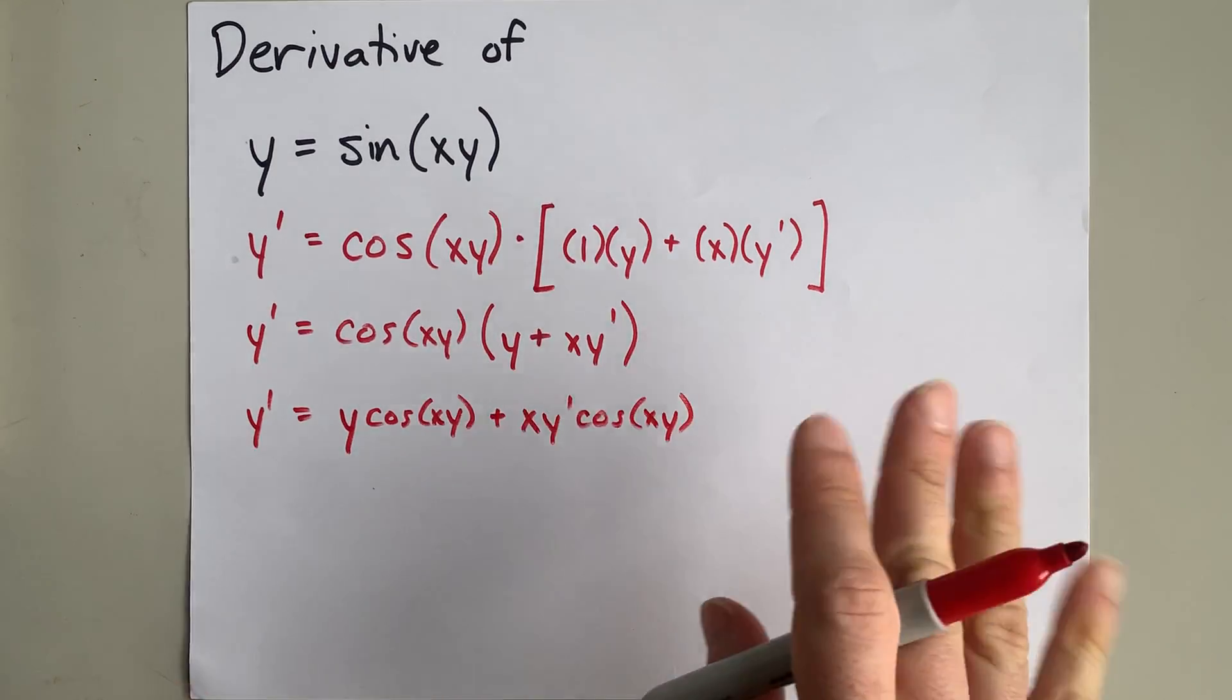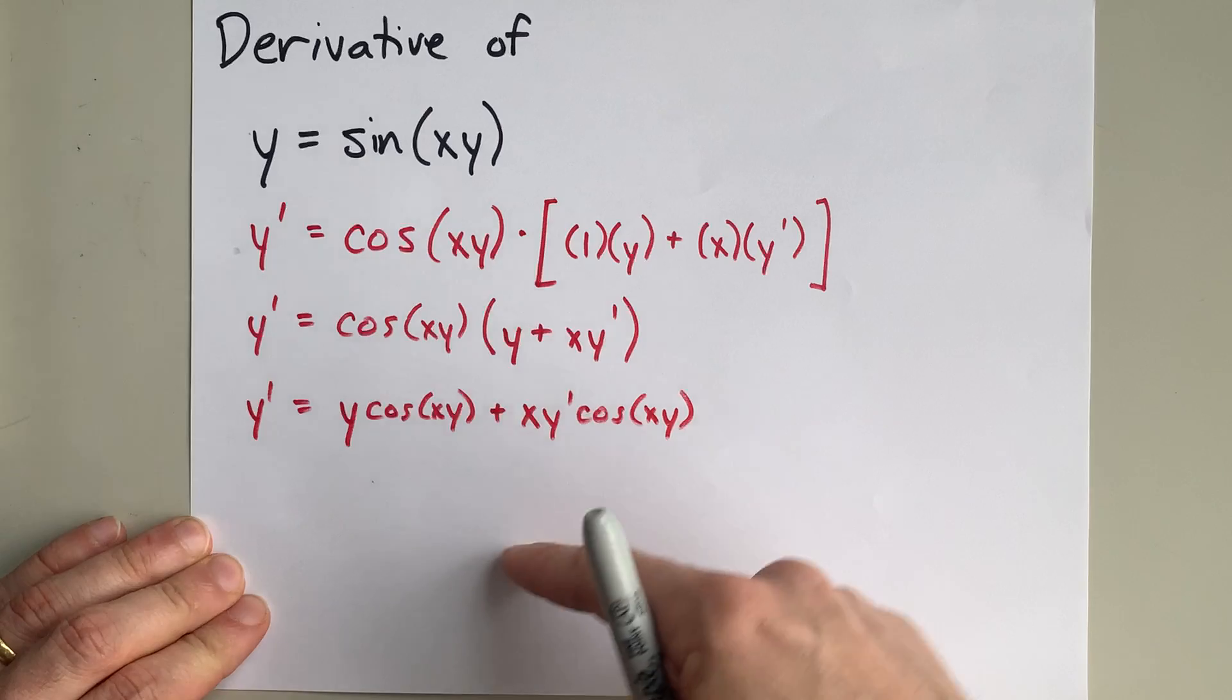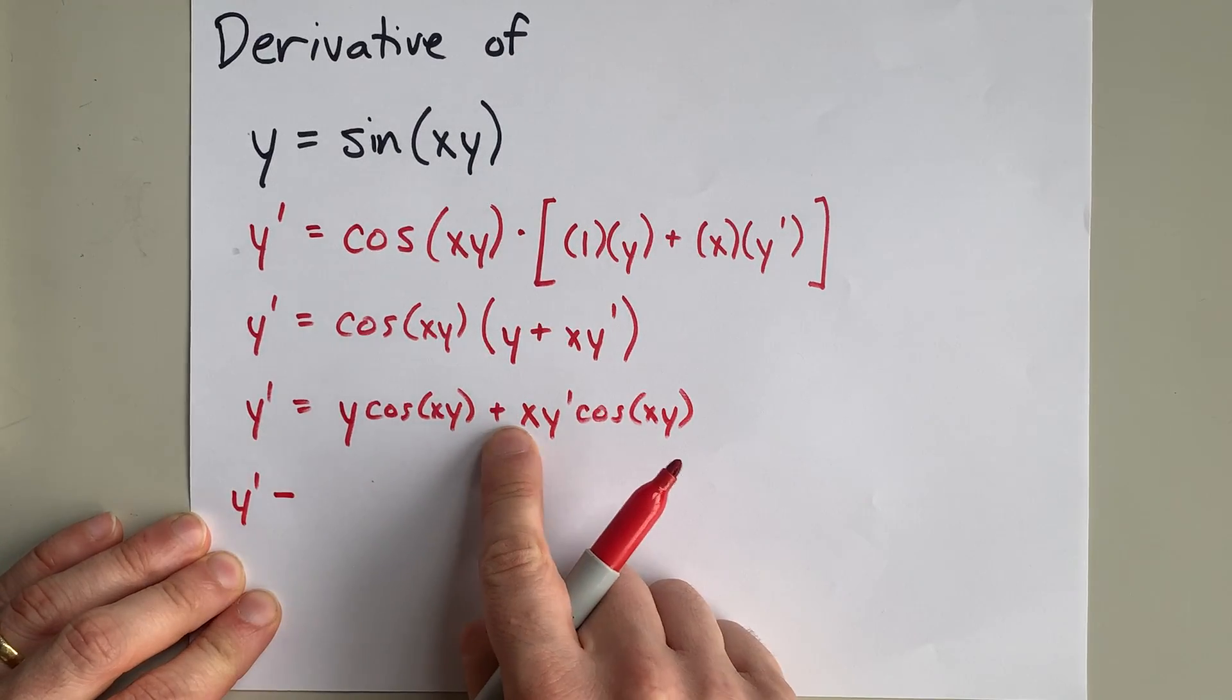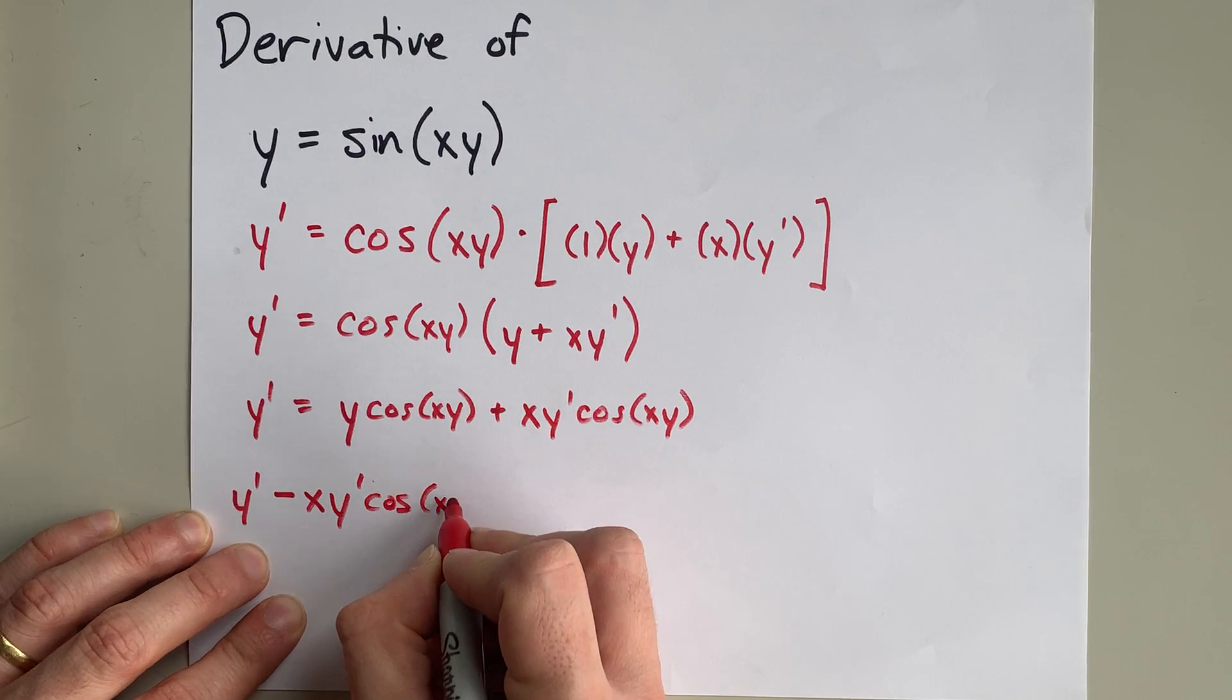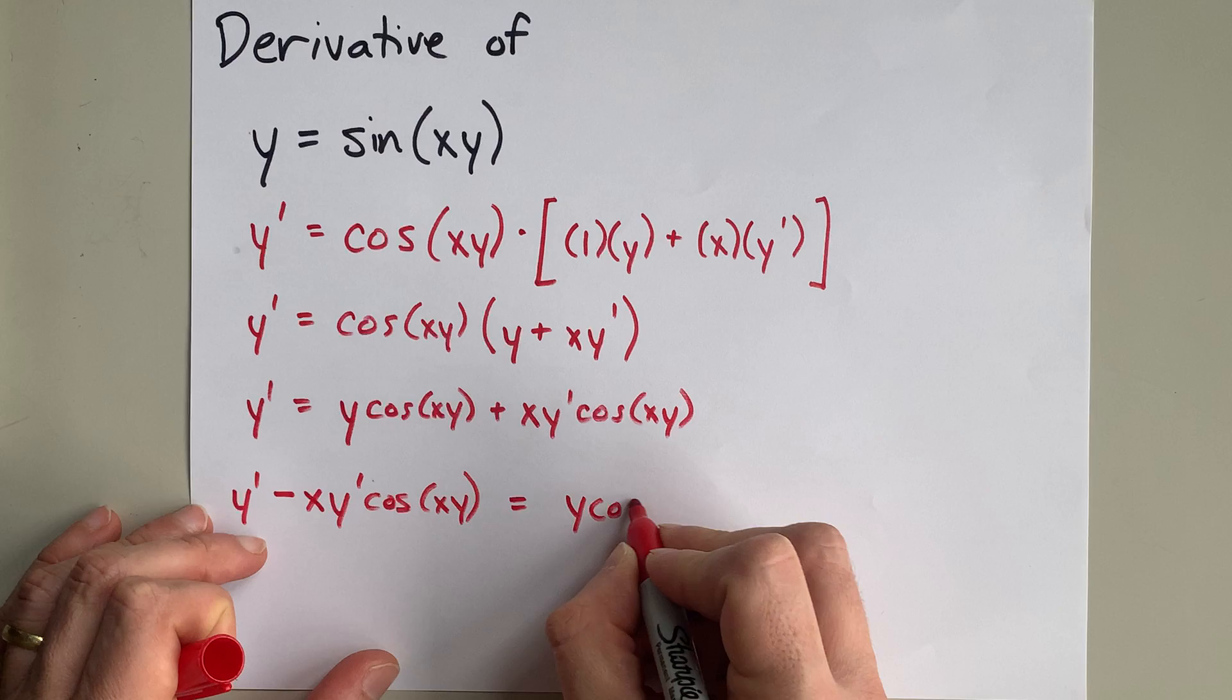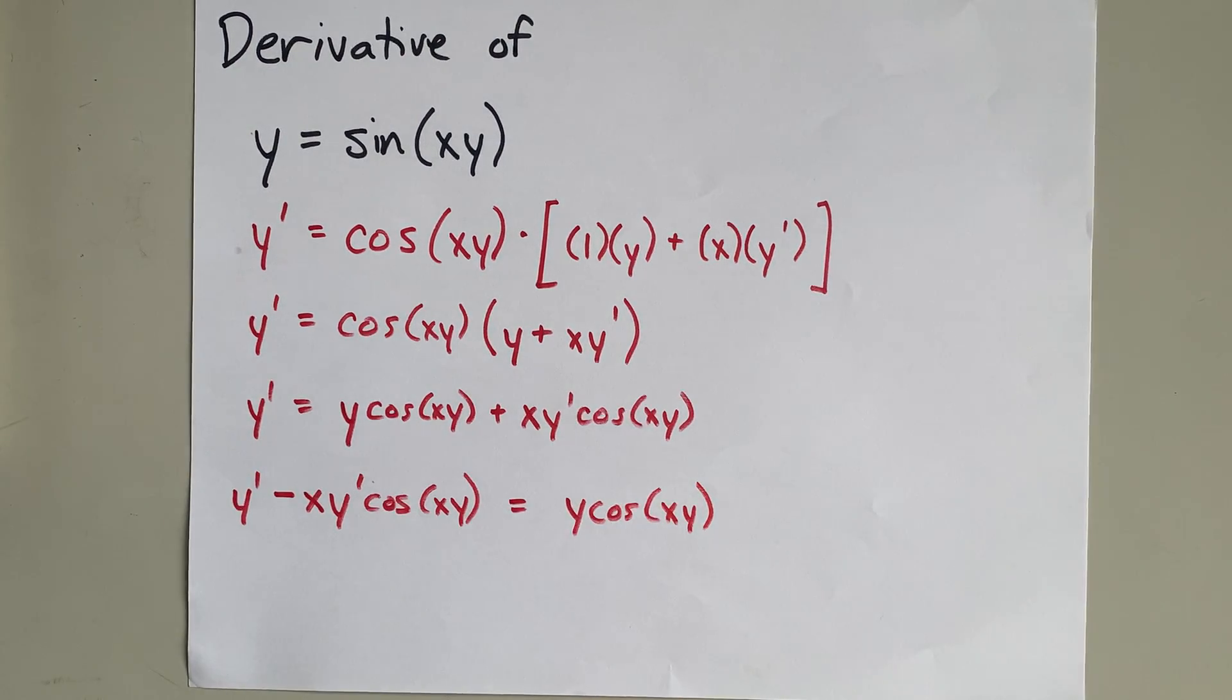The reason I'm doing that is that this term has y prime in it. I'm going to move it to the left where the other y prime is. Plus xy prime·cos(xy) becomes minus xy prime·cos(xy) on the other side of the equation. I still have y·cos(xy) on the right-hand side.